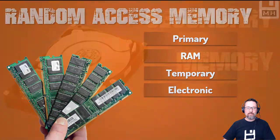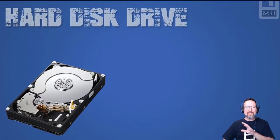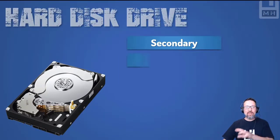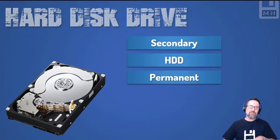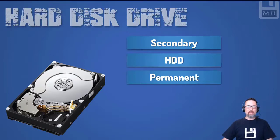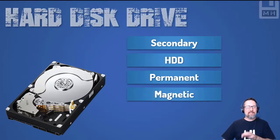Now we're going to secondary memory. Secondary memory is our HDD — our hard disk drive. That's the actual disk that we save things onto. It's permanent, because you can shut down your computer, switch it back on, and the file is still there. It uses magnetic storage.